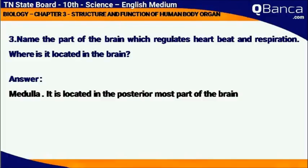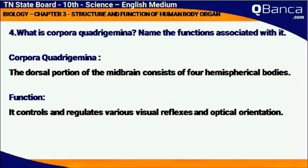What is corpora quadrigemina? Name the function associated with it. The dorsal portion of the mid-brain consists of four hemispherical bodies called corpora quadrigemina. It controls and regulates various visual reflexes and optical orientation.